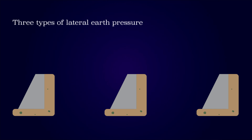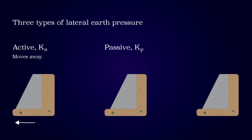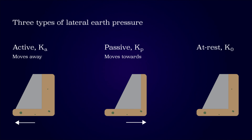The coefficient of active earth pressure is used when the retaining structure moves away from the soil, whereas the soil is extending and the lateral earth pressure decreases. The coefficient of passive earth pressure is used when the retaining structure moves towards the soil, whereas the soil is compressed and the lateral earth pressure increases. The coefficient of earth pressure at rest represents the soil's natural state of equilibrium and is present even if no structure is built. It is used when the retaining structure is stationary and not moving relative to the soil.